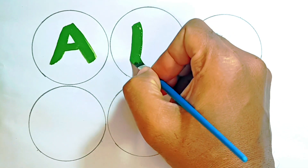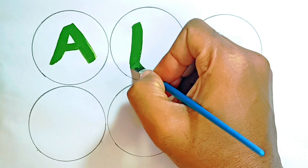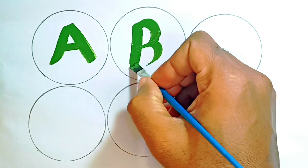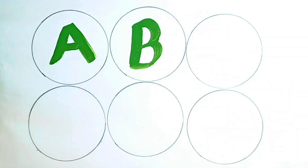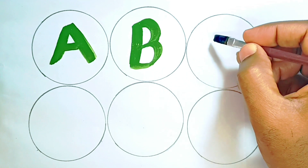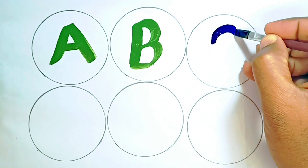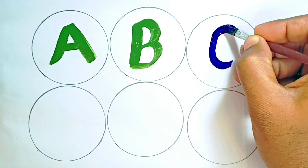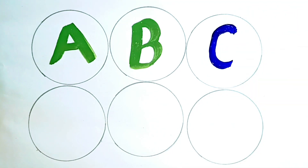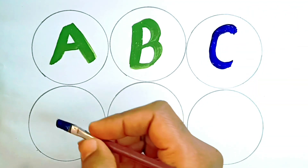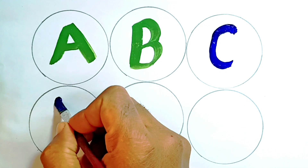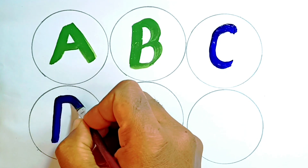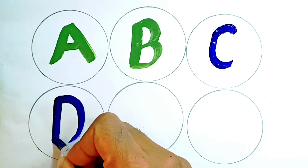Green Color. B for Banana. B for Bowl. Blue Color. C for Car. D for Doll.